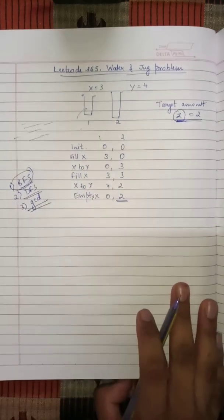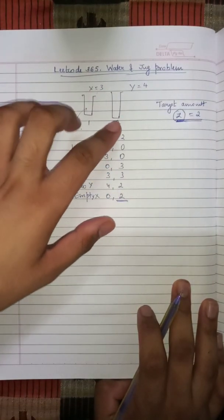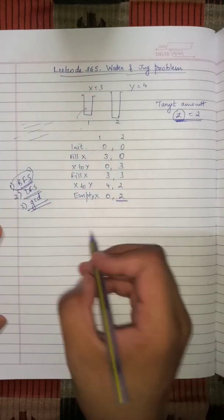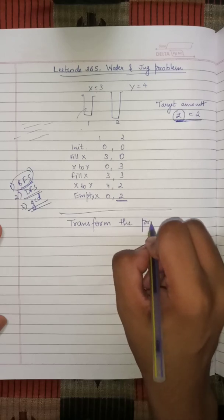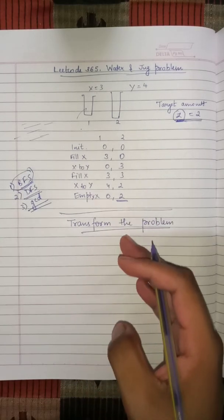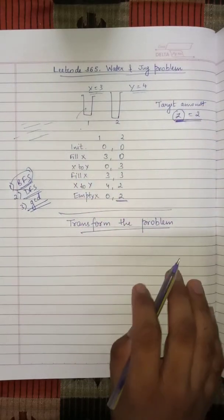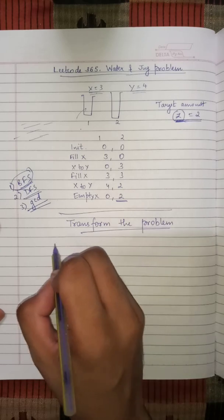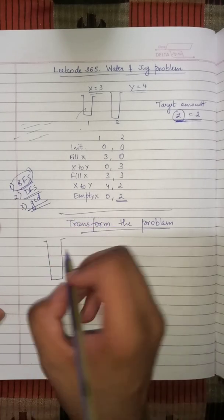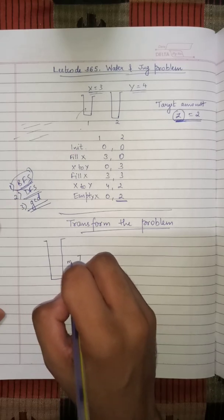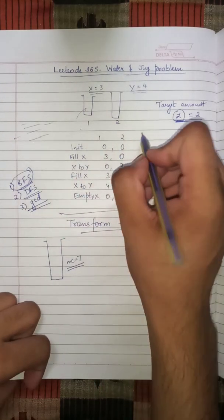How can this problem be solved by BFS? This is a complex scenario with two jugs and a target amount. I'm going to transform the problem into an equivalent, easier problem. With x=3 and y=4, effectively we have one jug — hear me out — with a max capacity of 7.